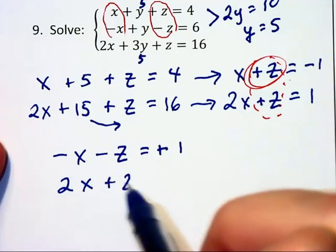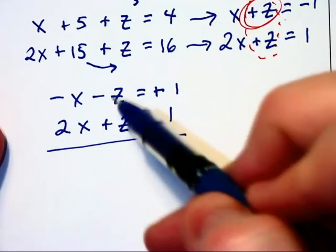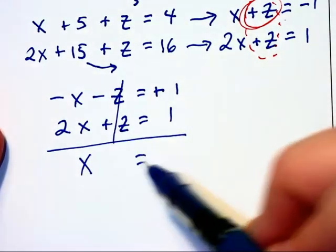and the bottom equation will be 2x plus z is equal to 1 also. Adding down, we have x is equal to 2,